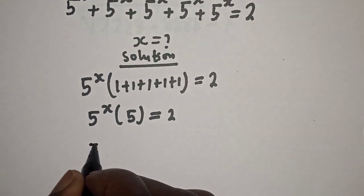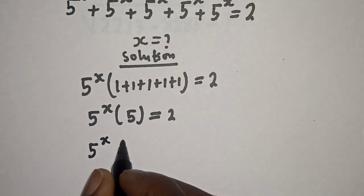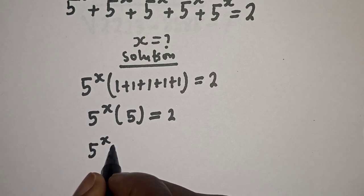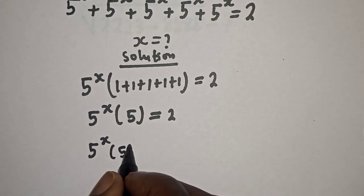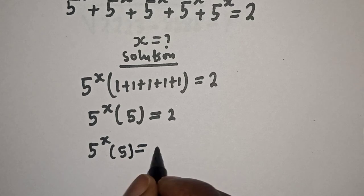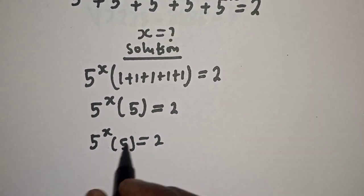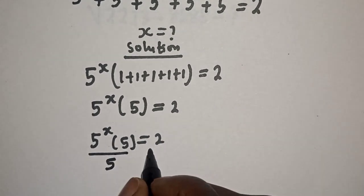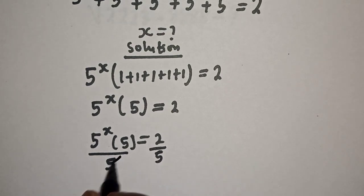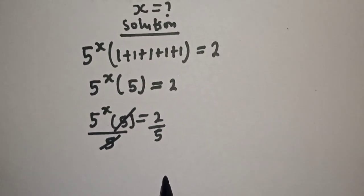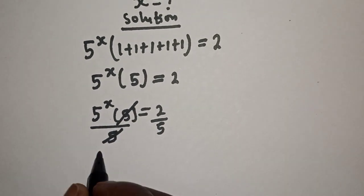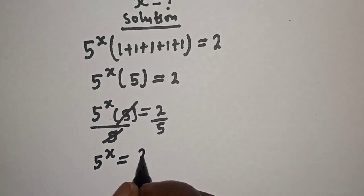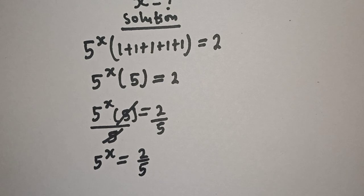Then we have 5 raised to power s, bracket 5, is equal to 2. Let's divide both sides by 5. 5 raised to power s divided by 5, divided by 5. This 1 will cancel this. So 5 raised to power s is equal to 2 over 5.